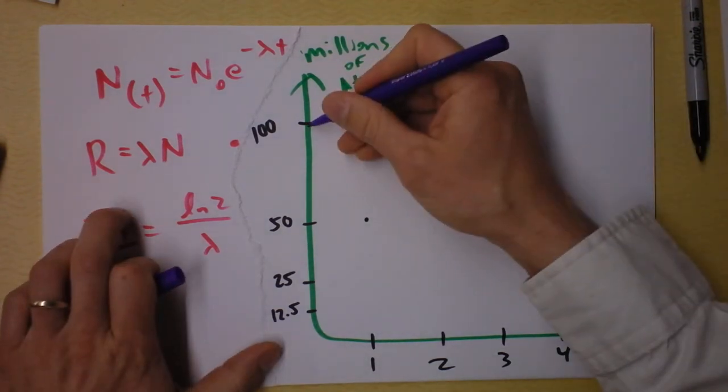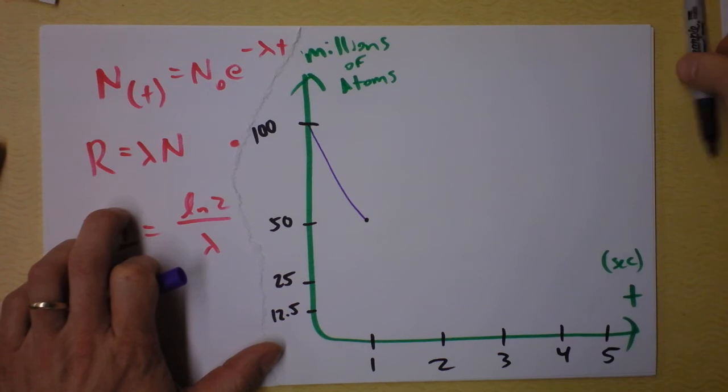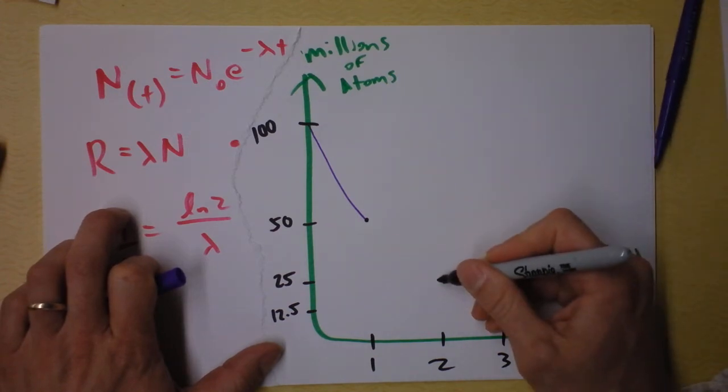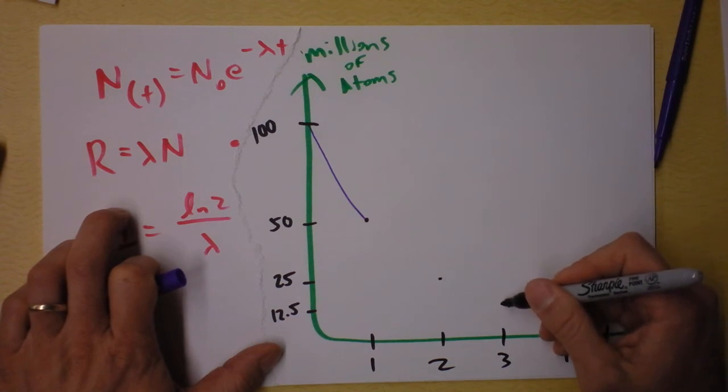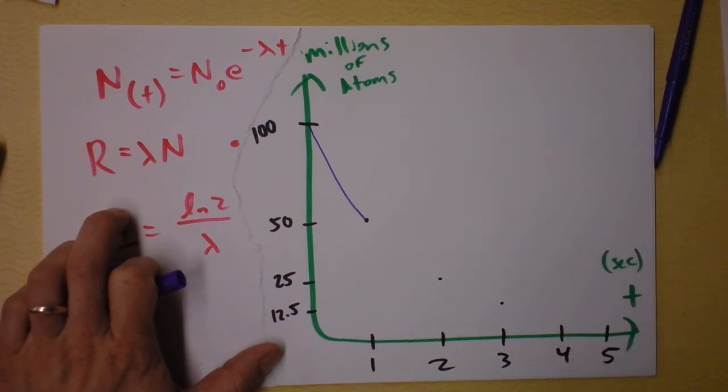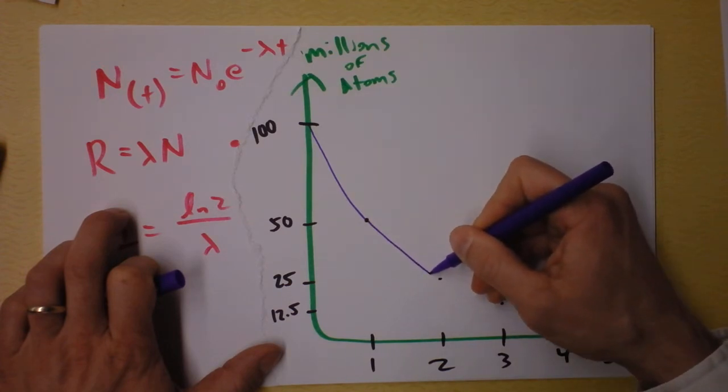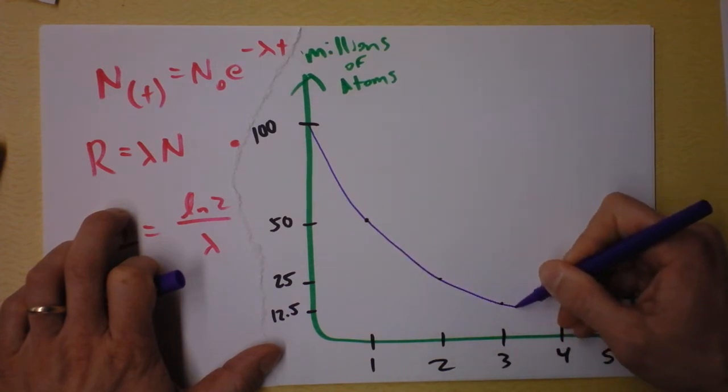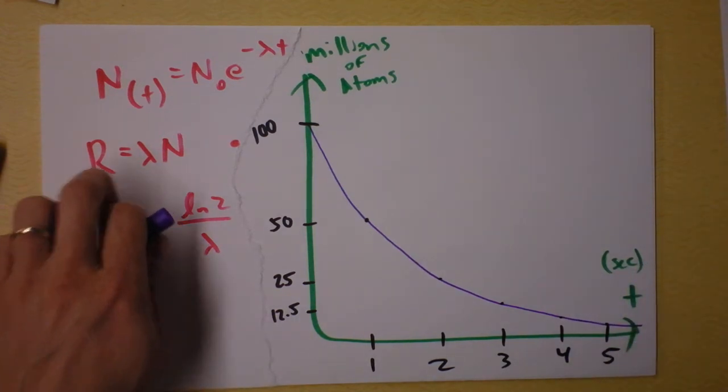It also means that after 2 seconds we'll be at 25 million atoms, and after 3 seconds we'll be at 12.5 million atoms. So you can see that this sucker is cutting the difference between itself and the x-axis in half every second. That's the idea of a half-life and that's why we get this asymptotic behavior right here.